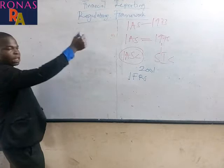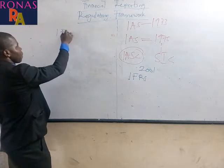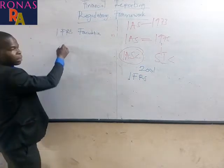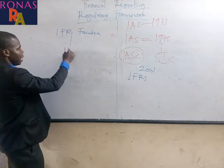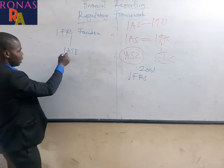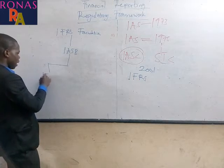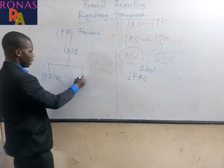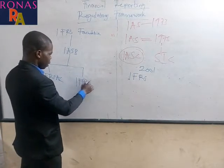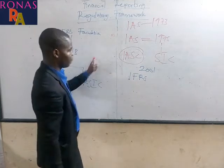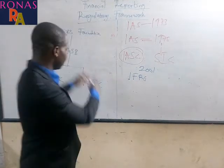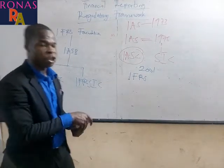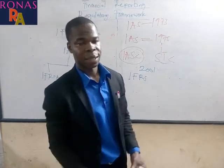The composition we have now is: we have the highest board, which is the IFRS Foundation, and then it comes down to the International Accounting Standard Board (IASB), then the International Financial Reporting Standard Advisory Committee, and then the International Financial Reporting Interpretations Committee. These four groups come together to issue or revise the existing standards.